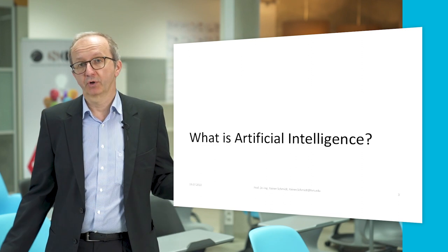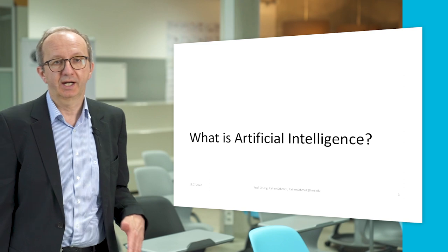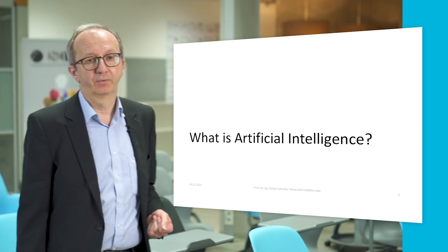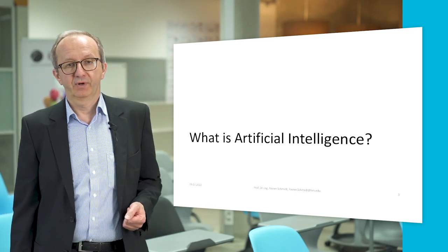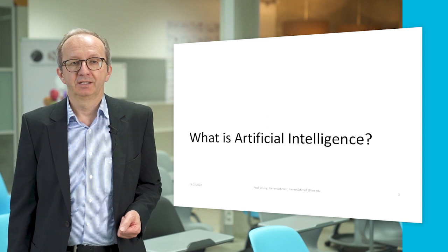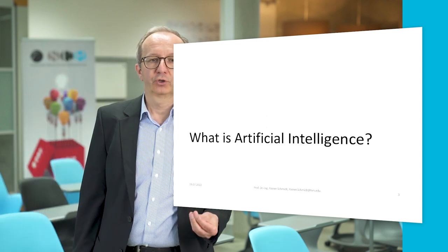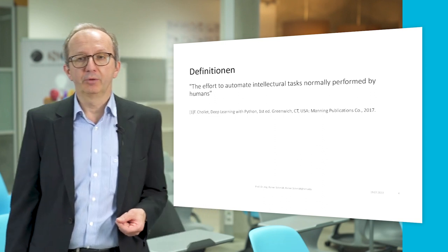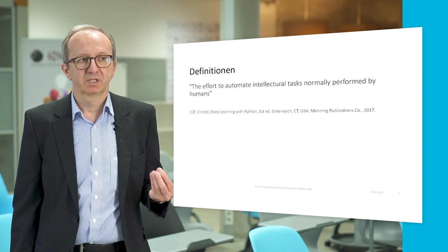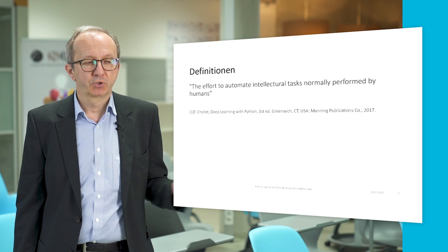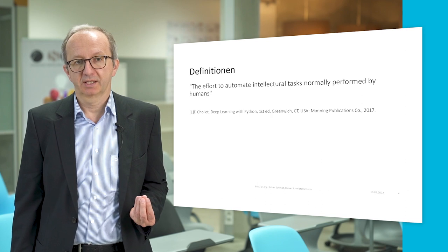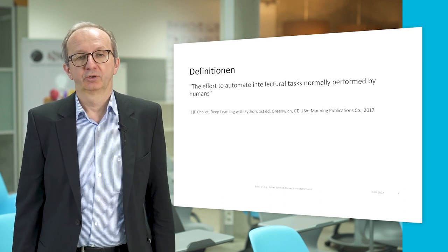So what is artificial intelligence? There are many definitions. The one I like most is from François Chollet, who wrote a very important book on deep learning with Python. He says it is an effort to automate intellectual tasks normally performed by humans. So we try to automate decisions and procedures that are normally accomplished by human beings and then transfer them to computers.